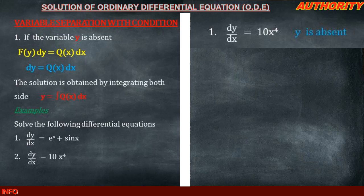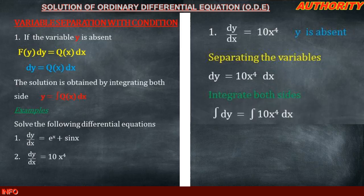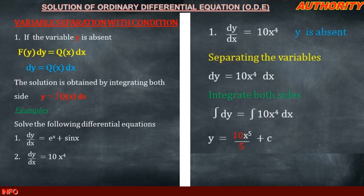We make dy the subject by multiplying both sides by dx, giving dy equal to 10x^4 dx. Integrating both sides: the integral of dy equal to the integral of 10x^4 dx. The left-hand side gives y. On the right-hand side we have 10x^5 over 5 plus c. Since 10 divided by 5 equals 2, we get y equal to 2x^5 plus c.